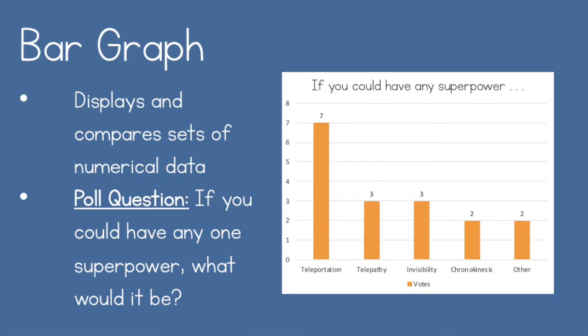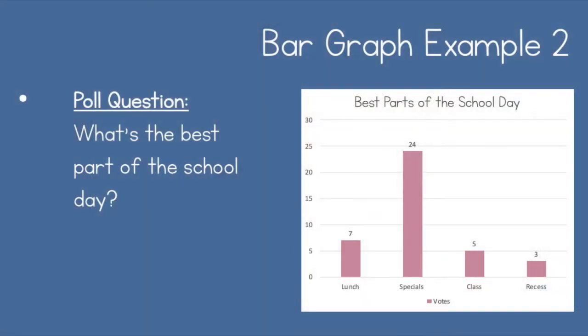Telekinesis — being able to control or manipulate things with your mind — got two votes, and other answers that didn't fit into those categories also got two votes. By looking at this bar graph, we can see that teleportation is the most popular choice. I chose this graph because I wanted to compare how different superpowers ranked and be able to see the different sizes of the bars to tell us which is more popular.